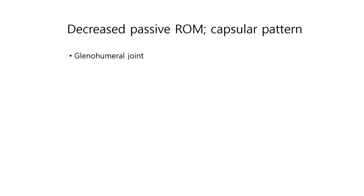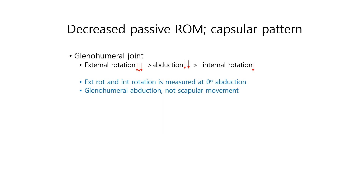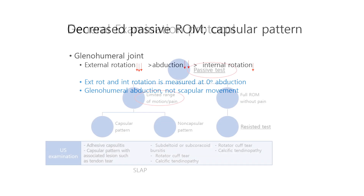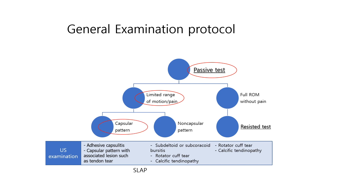The passive shoulder movement consists of external rotation, abduction, and internal rotation. When there is some limitation of a particular direction of passive movement, we differentiate into the capsular and non-capsular patterns. The capsular pattern begins with the restriction of external rotation, then abduction, and ends with an internal rotation limitation. External rotation is more severely limited than abduction and internal rotation, indicating a capsular limitation of the shoulder joint.